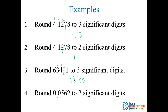How about 0.0562 rounded to two significant digits? Leading zeros, as we saw in our previous lesson, are never significant. So the five and the six are the first two significant digits. The first non-significant digit is this two — less than five — so I round it off and drop those digits. I keep just the five and the six, so it becomes 0.056.